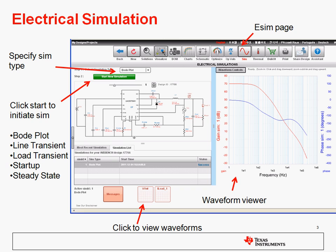This is what the electrical simulation page looks like. To get to the electrical simulation page, you'd click on the sine wave icon in the WEBENCH navigation bar up here on the top right. There's a dropdown that allows you to specify your simulation type. There's also a button that lets you start your simulation. Simulation types include Bode plot, line transient, load transient, startup, and steady state.